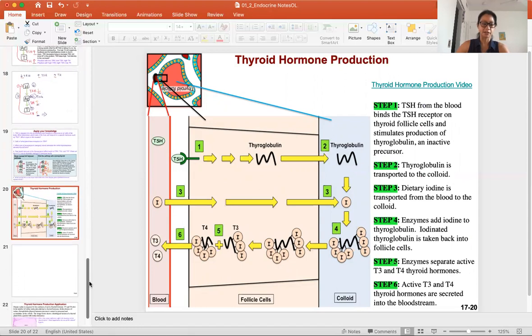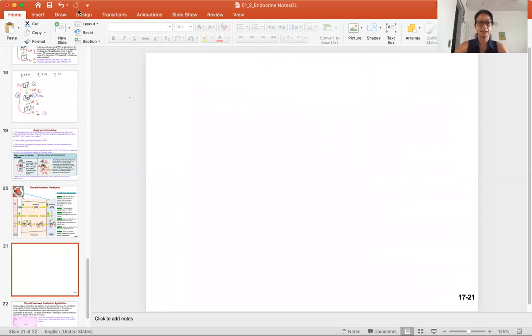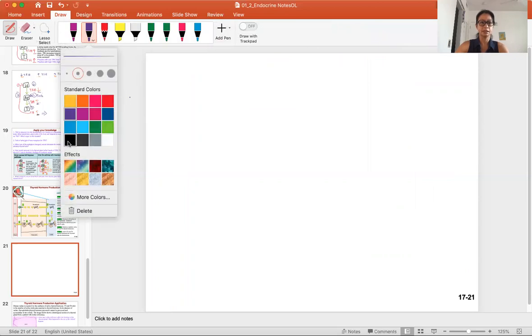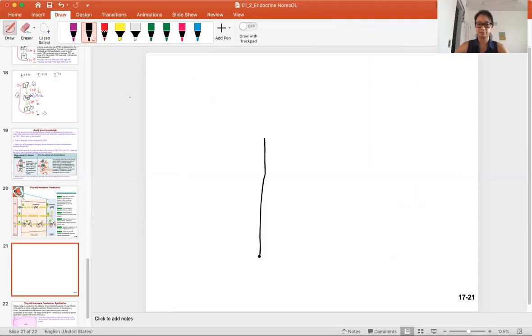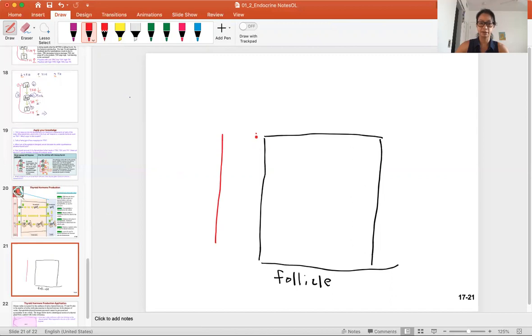Sometimes I like to just draw a simplified diagram so you can see the big picture a little bit better. We're looking at the follicle cells. It's a circular cell, but I'm just going to draw a square. This will be the follicle cell. Next to the follicle cell is blood, circulating around the follicle cells.